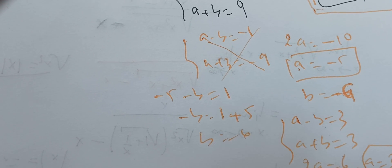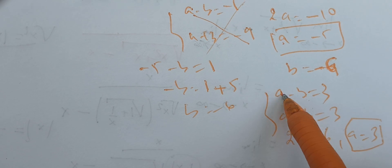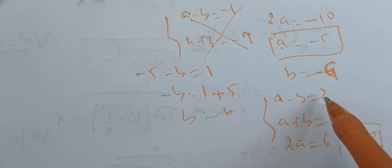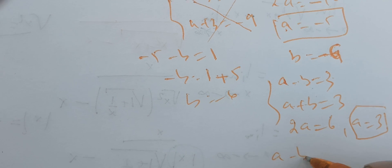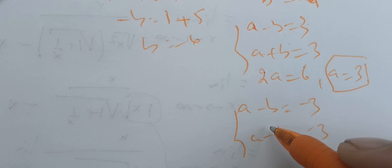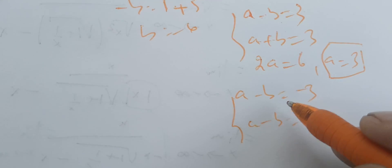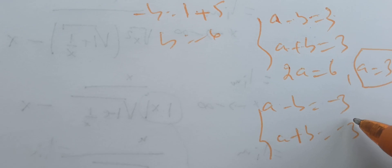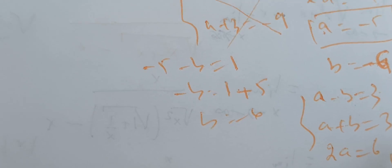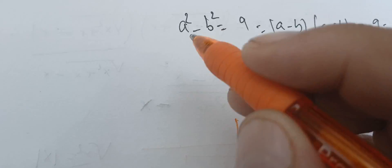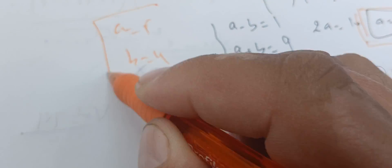The remaining case: a minus b equals minus 3 and a plus b equals minus 3. Adding gives a equals minus 3. Treating all these cases, the only valid solution we find is a equals 5 and b equals 4.